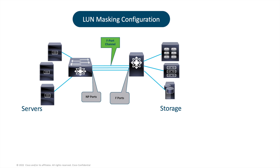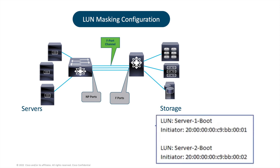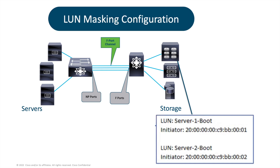Here you can see an example on the storage system: I create a LUN for Server One — it's a boot LUN so I call it Server One Boot — and the initiator that is allowed to connect to that LUN is Server One. Then I also create a LUN for Server Two, which is its boot LUN, and the only initiator allowed to connect to it is Server Two. Now I've configured both zoning and LUN masking. In the next part, I'll tie all the concepts we've discussed together, and you will see the server automatically connecting to its storage.